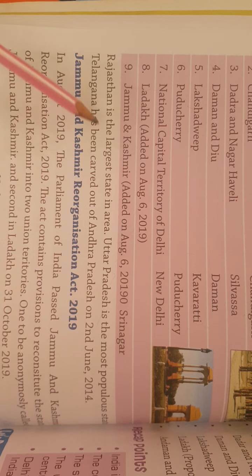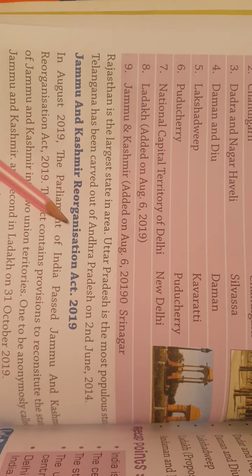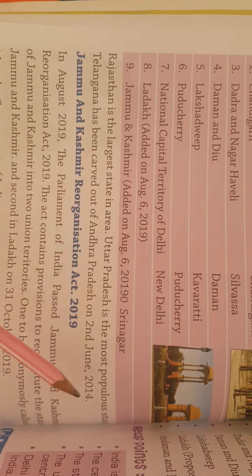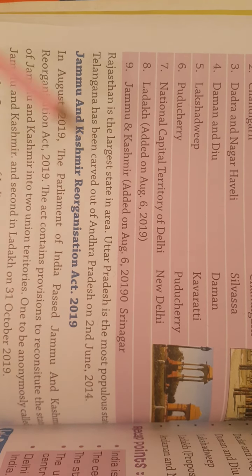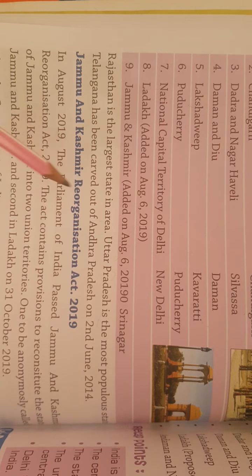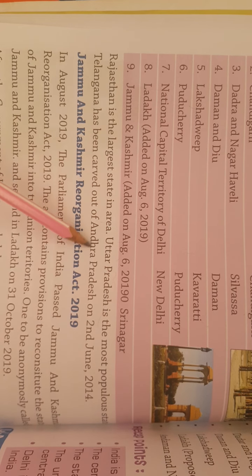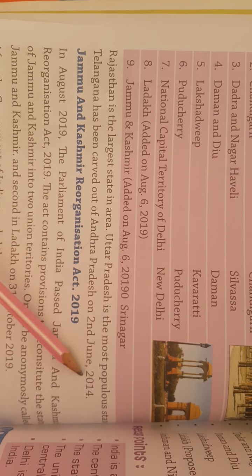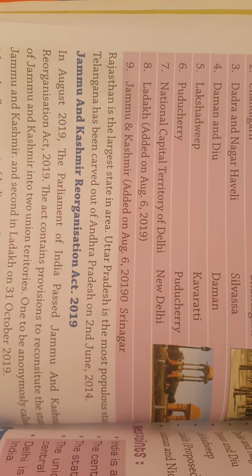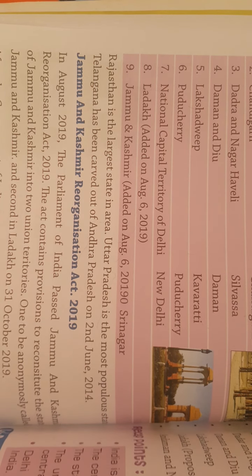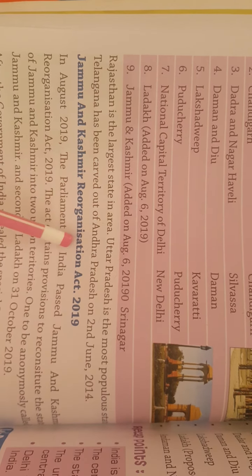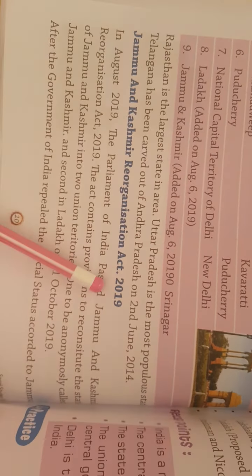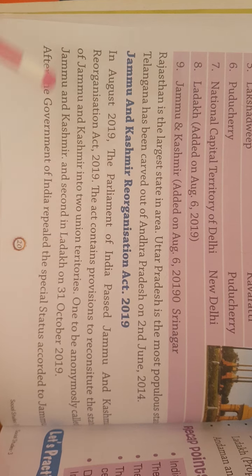Rajasthan is the largest state in area. Uttar Pradesh is the most populous state. Telangana has been carved out of Andhra Pradesh on 2nd June 2014. Jammu and Kashmir Reorganization Act, 2019.